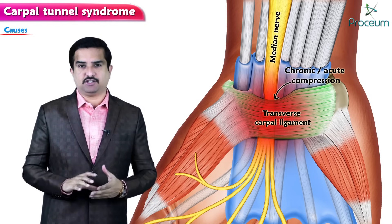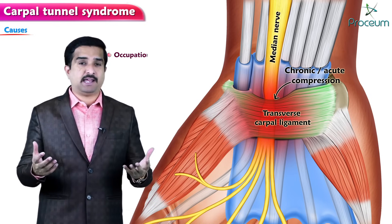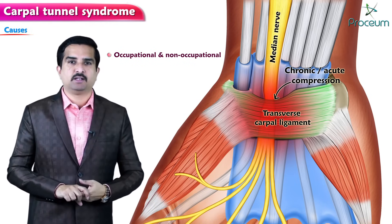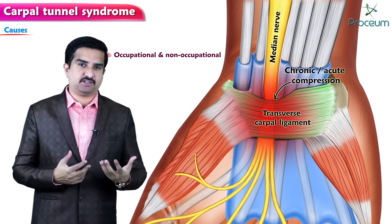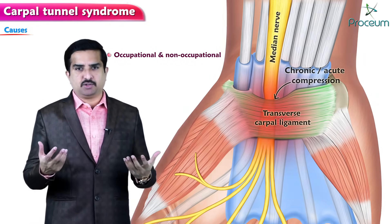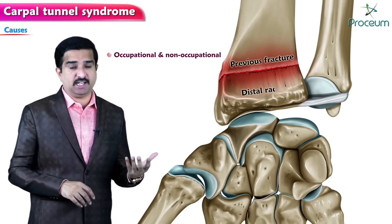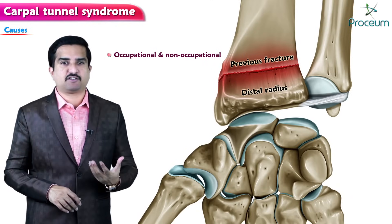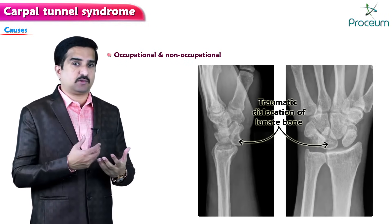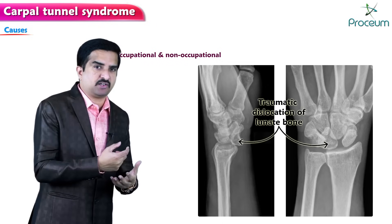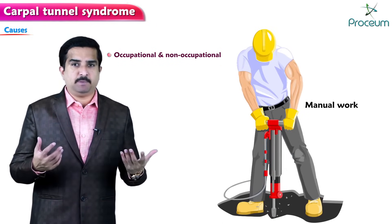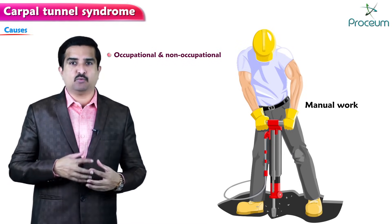Several occupational and non-occupational risk factors have been associated with carpal tunnel syndrome. Most often it may be due to a previous fracture of the distal radius, which is one of the most important risk factors, or traumatic dislocation of the lunate — whenever there is a traumatic dislocation of the lunate, the lunate bone compresses the nerve.